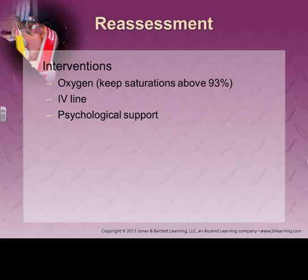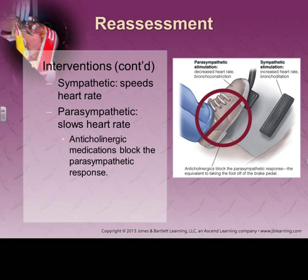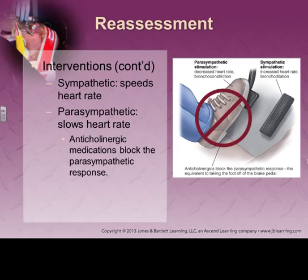Reassessment — we know what to reassess. We're looking for mental status, looking for changes in SpO2, and we're going to offer psychological support. As for our interventions, we may need autonomic nervous system interventions — we may need to stimulate the sympathetic or the parasympathetic, or we may need to work against the parasympathetic.